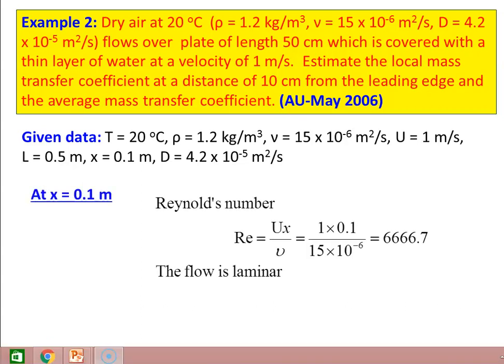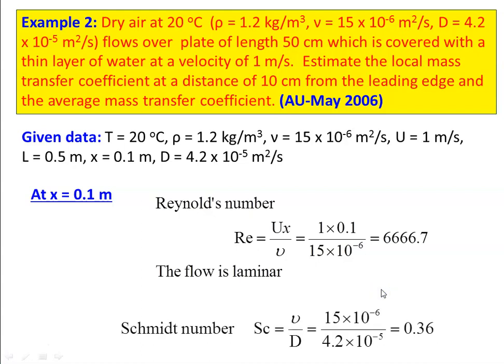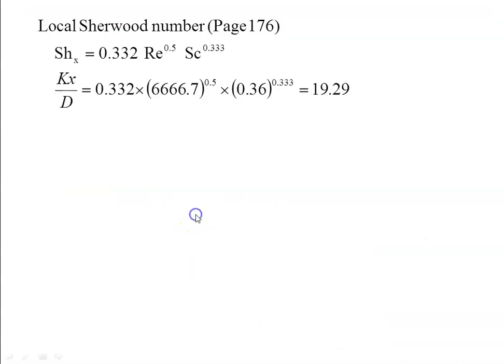At x = 0.1 m: Reynolds number Re = ux/ν = 1 × 0.1 / (15 × 10⁻⁶) = 6666.7 — the flow is laminar. Schmidt number Sc = ν/D = 15 × 10⁻⁶ / (4.2 × 10⁻⁵) = 0.36. For laminar flow, local Sherwood number from page 176 of data book: Sh = 0.332 × Re⁰·⁵ × Sc⁰·³³³. Substituting: kx/D = 0.332 × (6666.7)⁰·⁵ × (0.36)⁰·³³³ = 19.29.